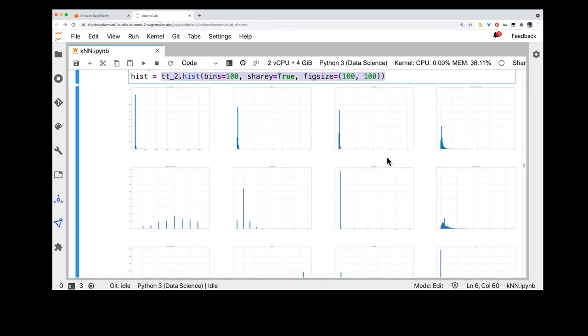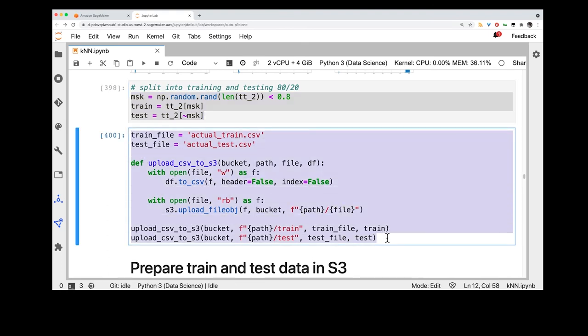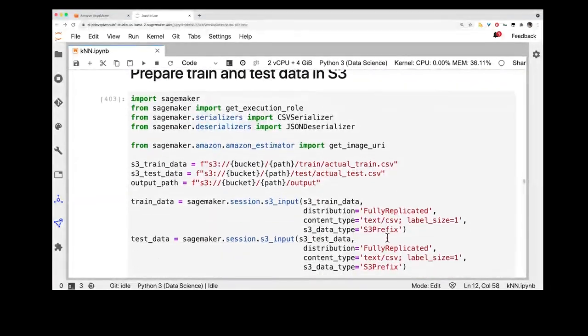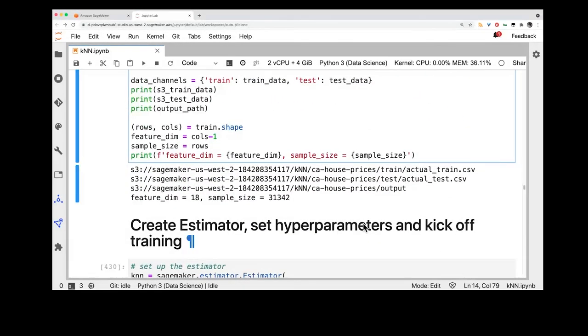Now, we split the data into training and testing datasets, and upload the resulting CSVs into S3. We are now ready to configure the train and test channels. Note how the KNN container supports the label size parameter in the content type, indicating that our target attribute is in the first column, and consists of only one column. We examine the number of feature dimensions and the total number of samples we will use. We set the sample size parameter to be the entire dataset in this case, so no real sub-sampling is going on.